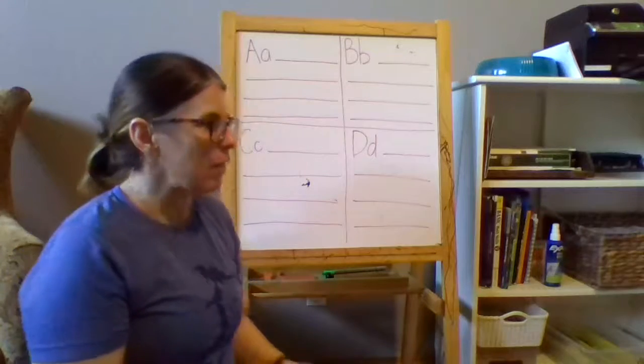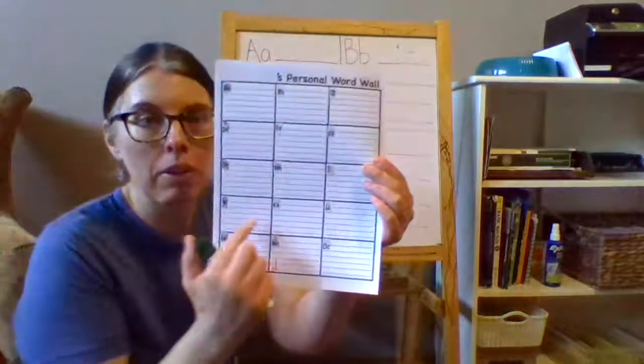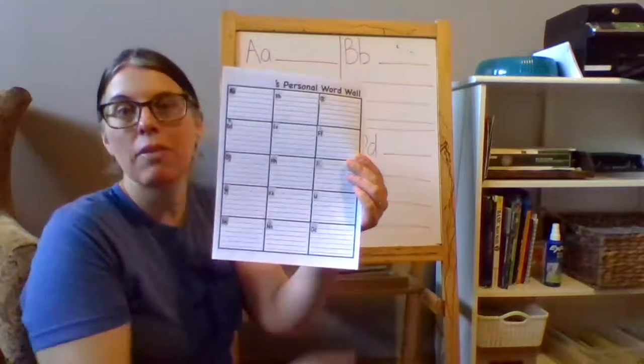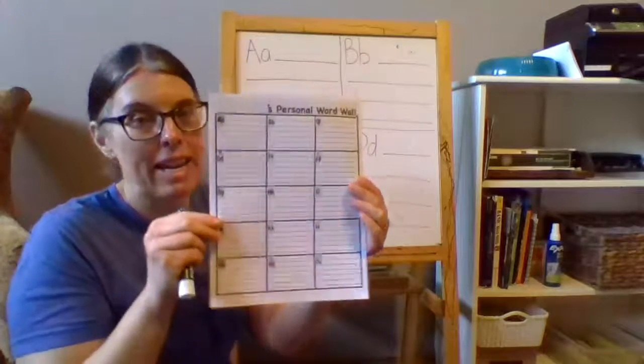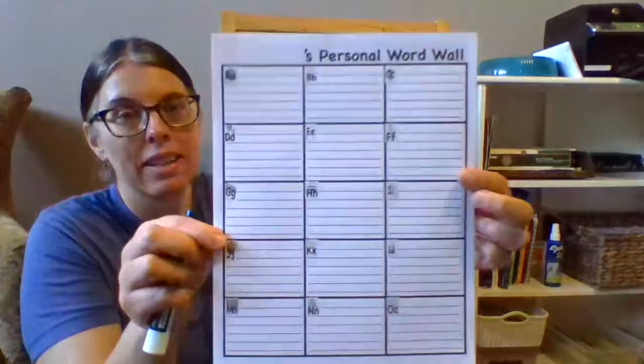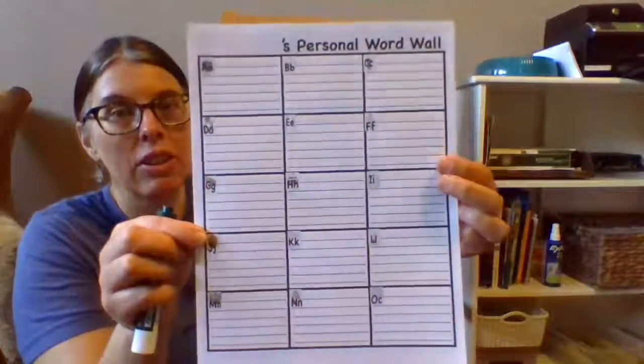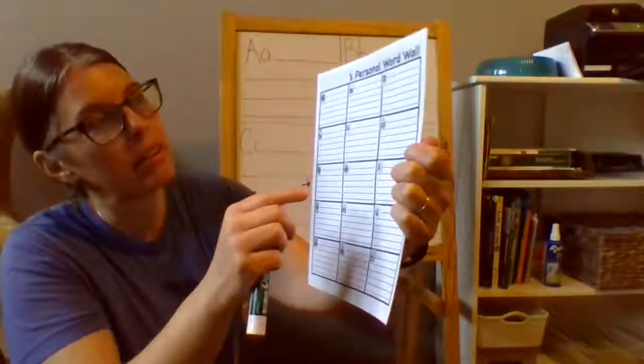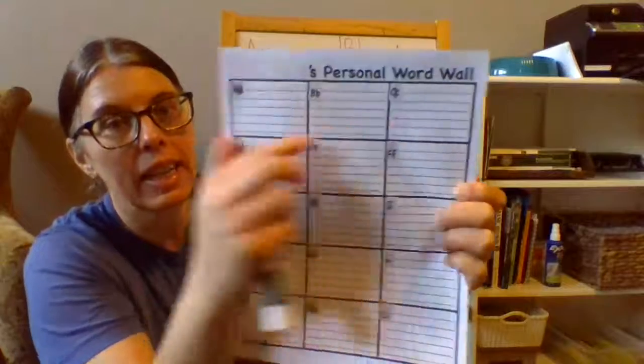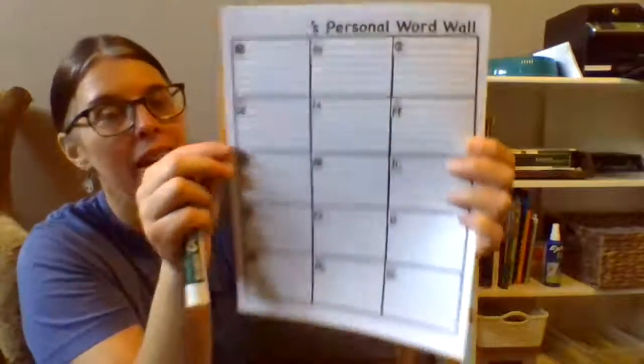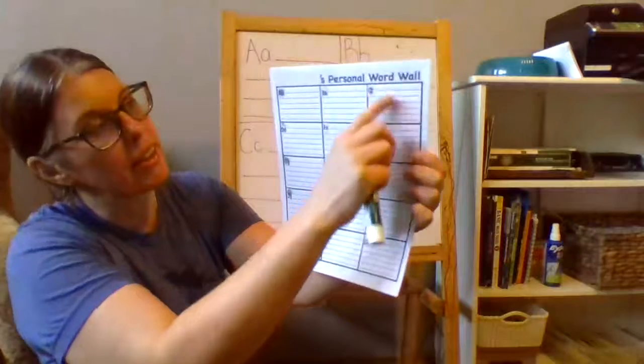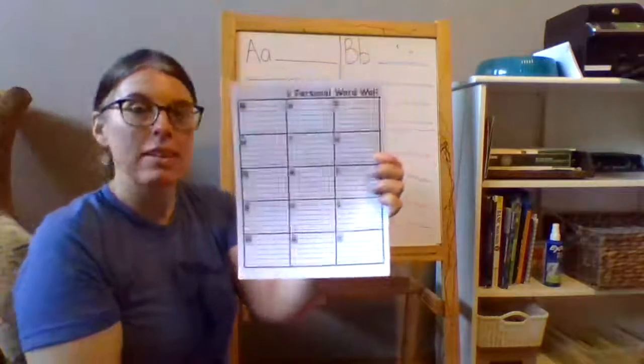Well if you have it written down somewhere in your book where you can look in your writing workshop folder, then you can just turn to this paper and you'll look here's C. So I'm going to look for the C's and then you could have it written right there to help you.